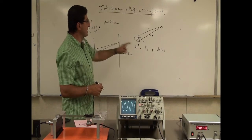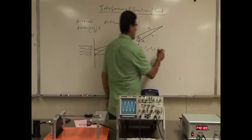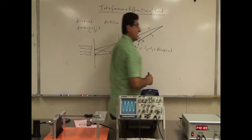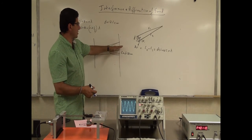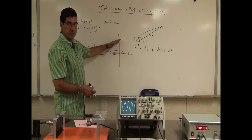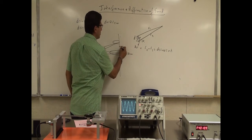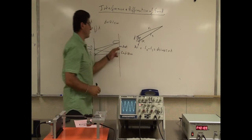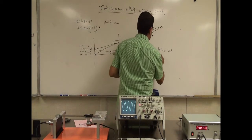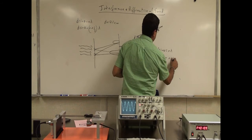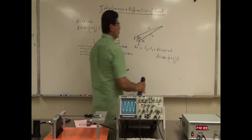When D sinθ equals a whole multiple of wavelengths — nλ — you get constructive interference. Between constructive maxima, you have destructive interference, which occurs when D sinθ equals (n + ½)λ. We can test this equation and use it to calculate the velocity of the sound wave.